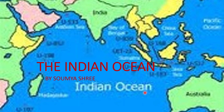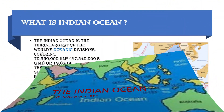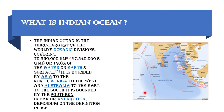And we're going to be learning all about that in today's episode. The Indian Ocean is the third largest of the world's oceanic divisions, covering about 7 crore 5,60,000 km² or 2 crore 72,40,000 sq mi, which is 19.8% of the water on the earth's surface. It is bounded by Asia to the north, Africa to the west, and Australia to the east. To the south, it is bounded by the Southern Ocean or Antarctica, depending on the definition and use.